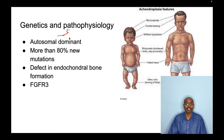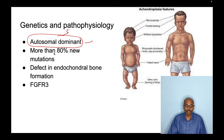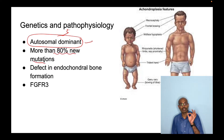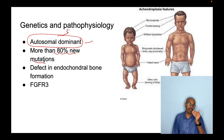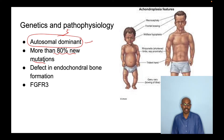What is the form of inheritance of this disease? It is inherited in an autosomal dominant fashion, but more than 80% are new mutations. If there is an inheritance pattern, the most common pattern of inheritance is autosomal dominant.